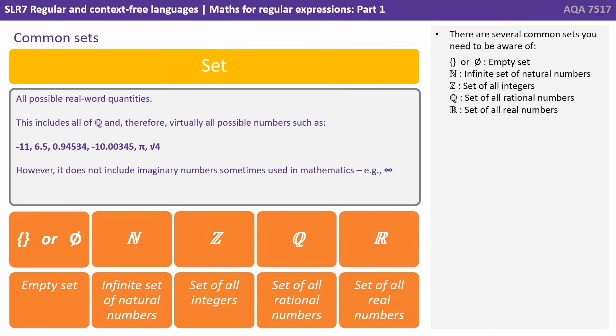We have R, the set of all real numbers. This is all possible real world quantities. And therefore this includes all of set Q, and therefore virtually all possible numbers. There are a few exceptions. For example, it doesn't include imaginary numbers sometimes used in mathematics, like infinity.